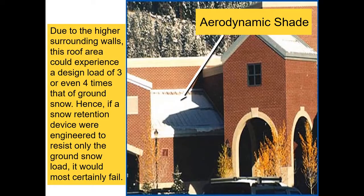Here we see what technically is called aerodynamic shade — in this area where we have high adjacent walls. When engineers calculate design roof snow for an area like that, the calculations are quite complex, and it could be two, three, four, even five times what the ground snow is. So you really need to know what that design roof snow load is in order to do the calculations. For a simple gabled roof you can use ground snow and get a conservative answer.